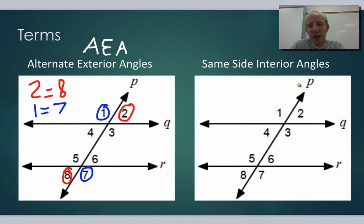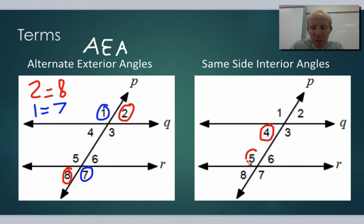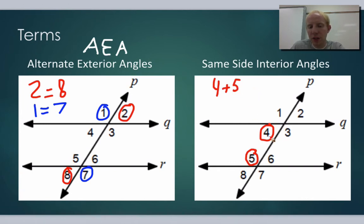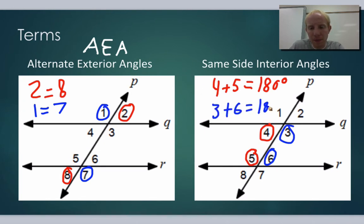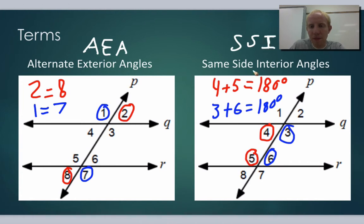The last theorem is the same side interior angles theorem. Same side means the angles are on the same side of the transversal, and interior means they're inside the parallel lines. Four and five, for example, would be same side interior. In this case they are not equal to each other — one is obtuse and one is acute. They actually add up to 180 degrees. We showed in class why that is using supplementary angles. Likewise, three and six are same side interior and also add up to 180. You can label this SSI in your proofs.